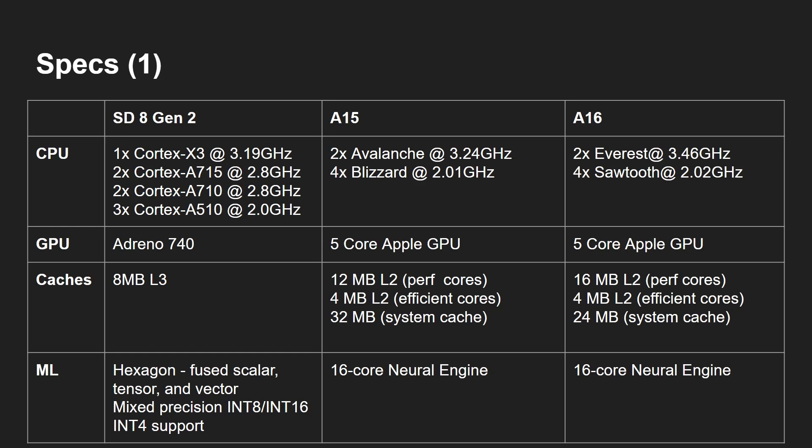For the GPU, the Snapdragon has the Adreno 740 which includes ray tracing. Apple has a 5-core Apple GPU, but they don't give much technical detail and there is no ray tracing.